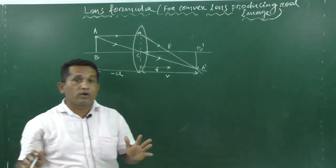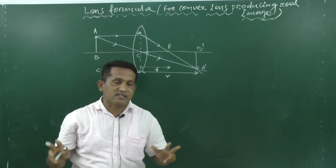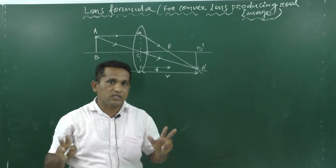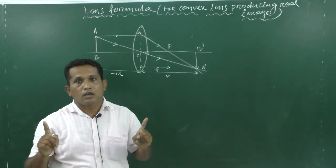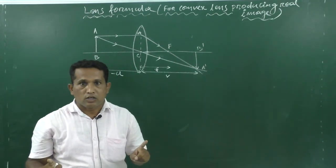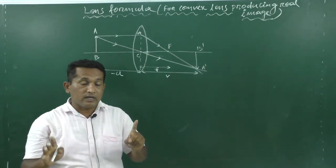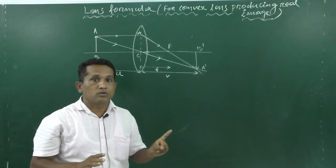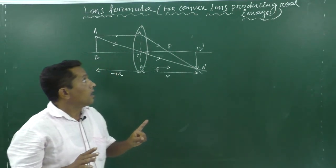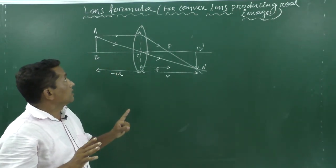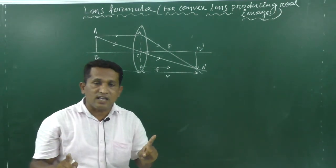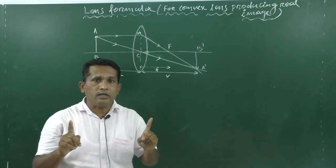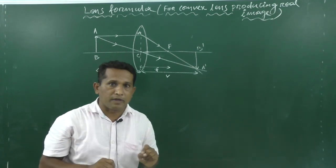Generally, we have two types of lenses — one is a convex lens and another is a concave lens. In this video today, we will learn the lens formula for the convex lens producing a real image.